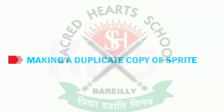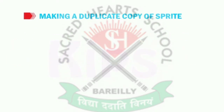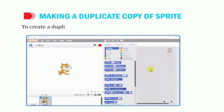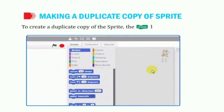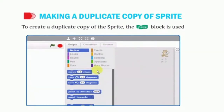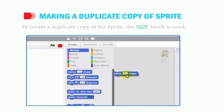Today we will start with making a duplicate copy of Sprite. First, we will learn how to make a duplicate copy of the Sprite. To create a duplicate copy of the Sprite, the stamp block is used. The stamp block is found inside the pen block, and using it we can create a duplicate copy of the Sprite.